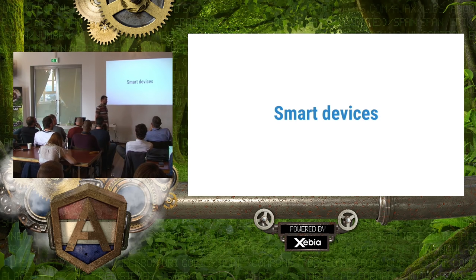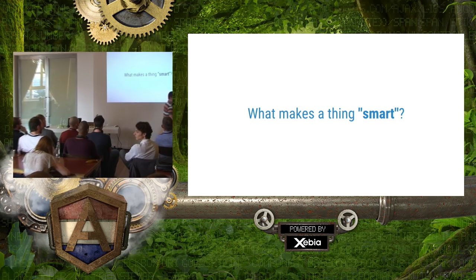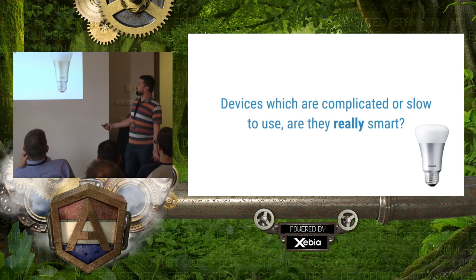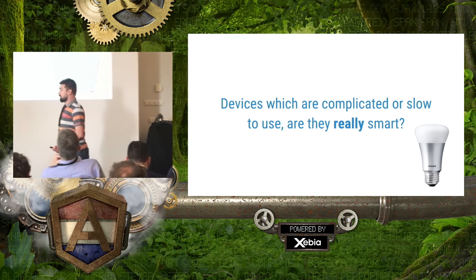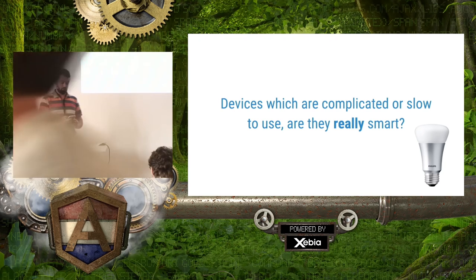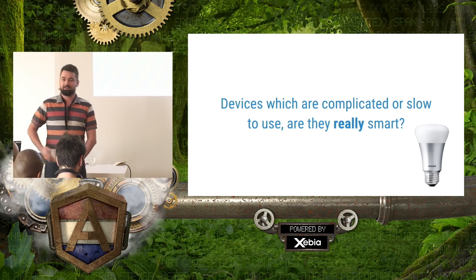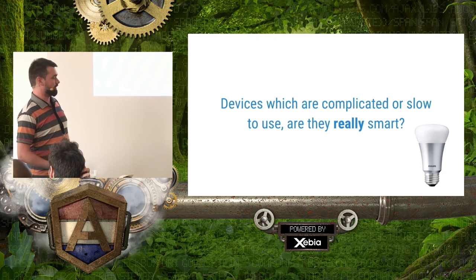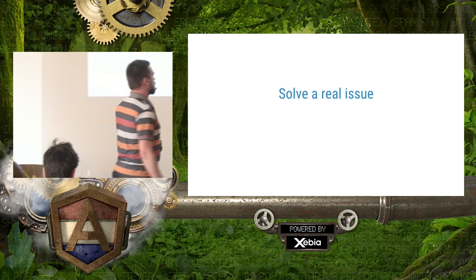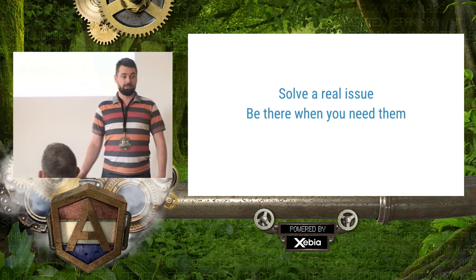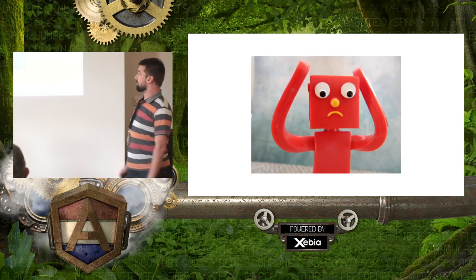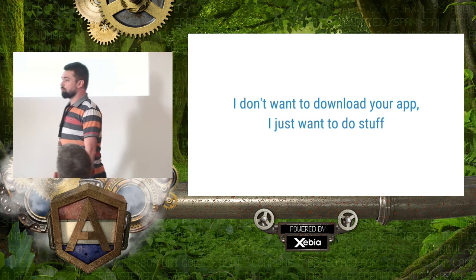We're here today to talk about smart devices, but what is it that makes a device smart? You can have something like this touch thing, like a smart lamp here — but is it really smart if it's complicated or slow to use? Say I want to turn on my light. First, I have to unlock my phone, find the app, wait for it to load, and then I can turn on the light. That's not really smart, is it? If it takes multiple seconds to do something you could do faster before, that's a problem.